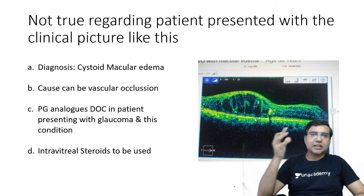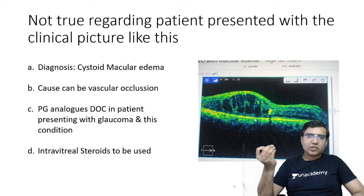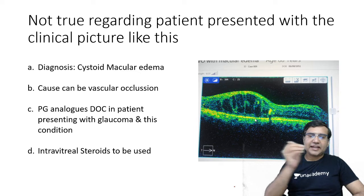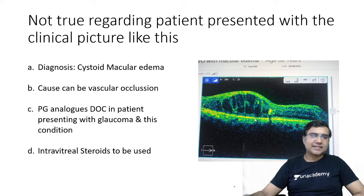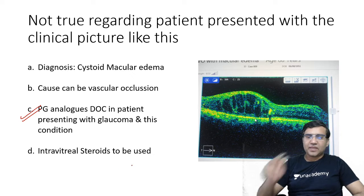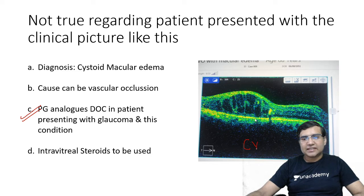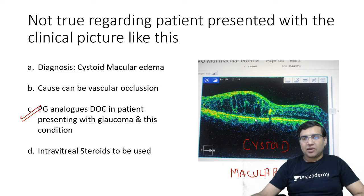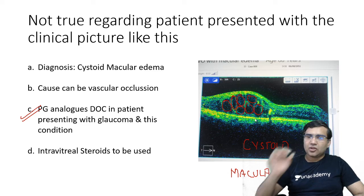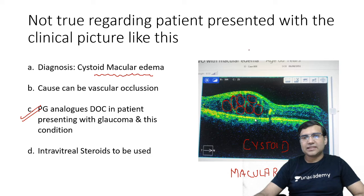Next question — what is NOT true regarding a patient presenting with this clinical picture? Options: diagnosis is cystoid macular edema; cause can be vascular occlusion; PG analogues are the drug of choice in glaucoma in this condition; intravitreal steroids are used in treatment. The answer is C. The condition shown is cystoid macular edema, identified by cyst-like spaces in the inner layers of the retina on optical coherence tomography.